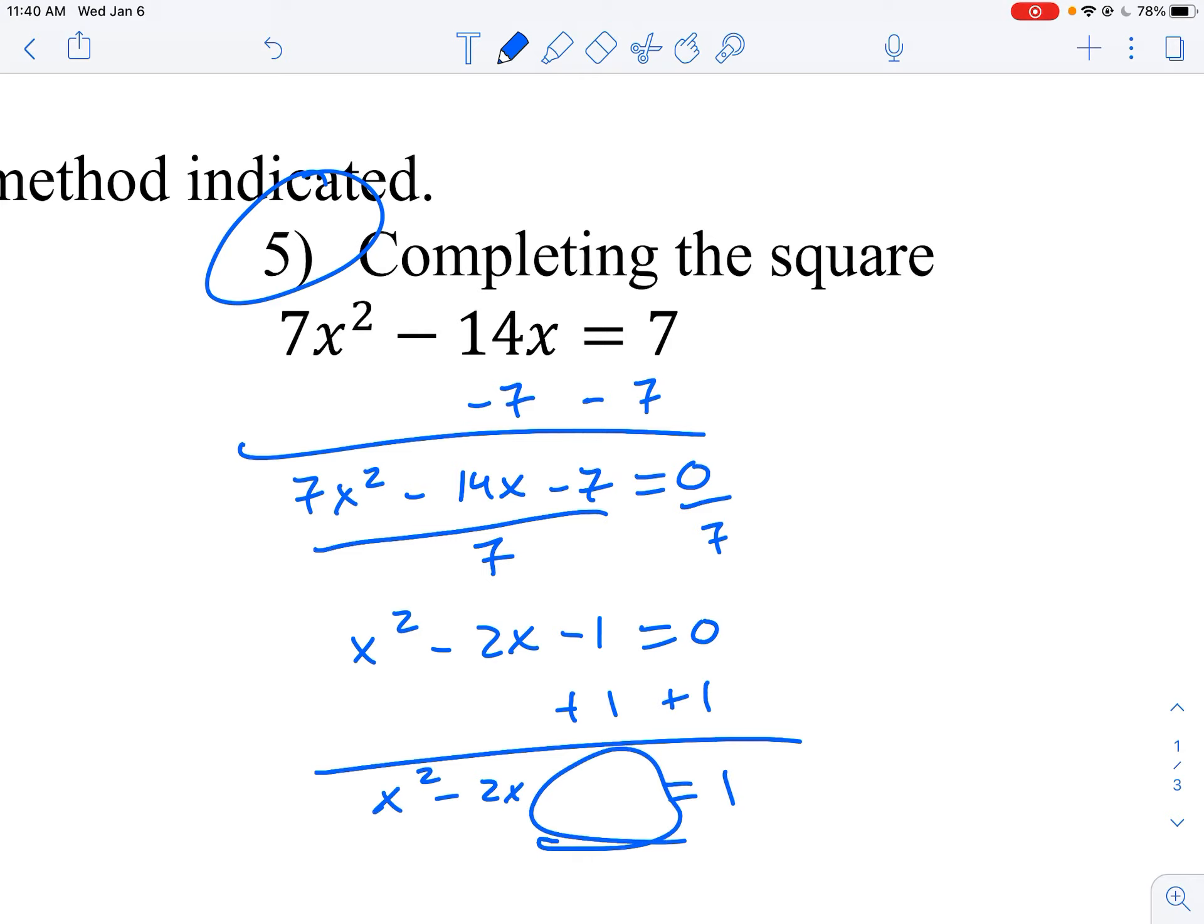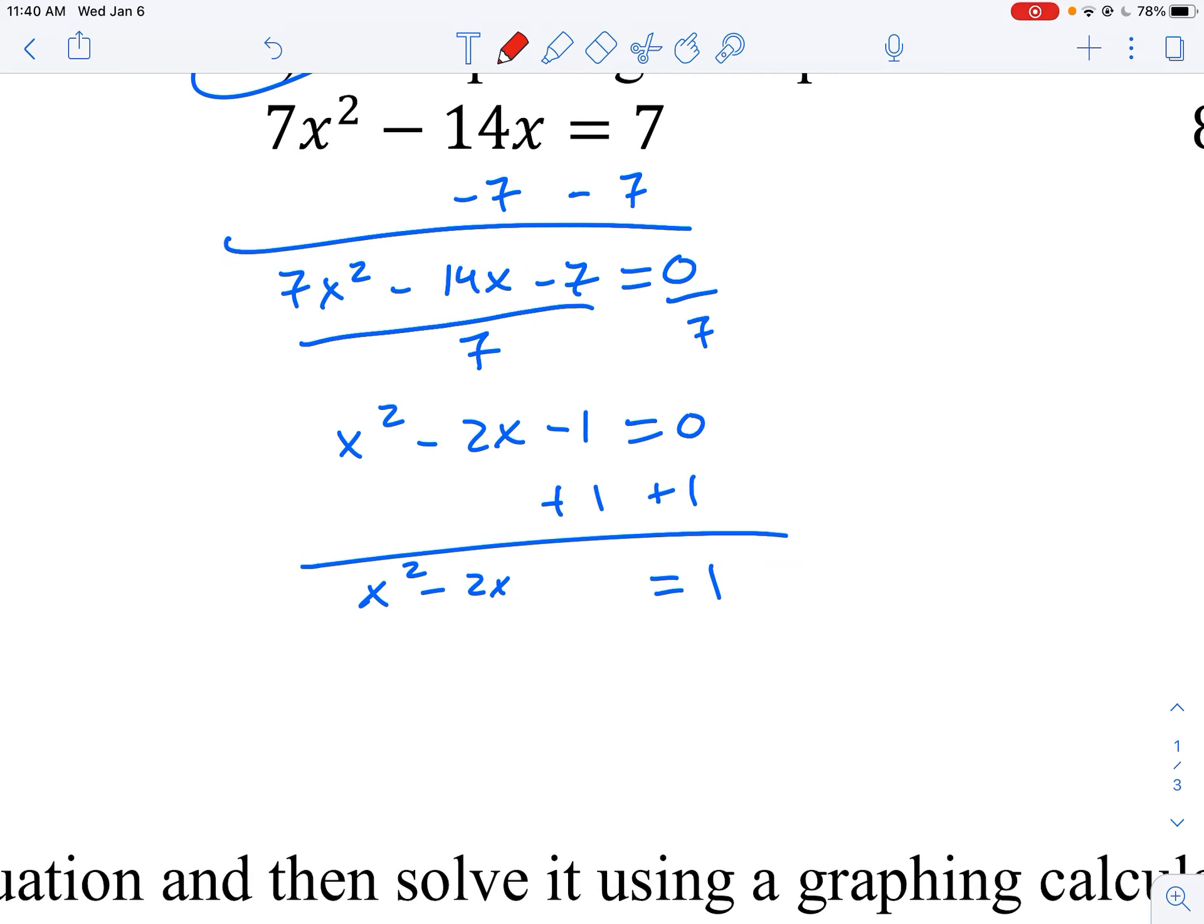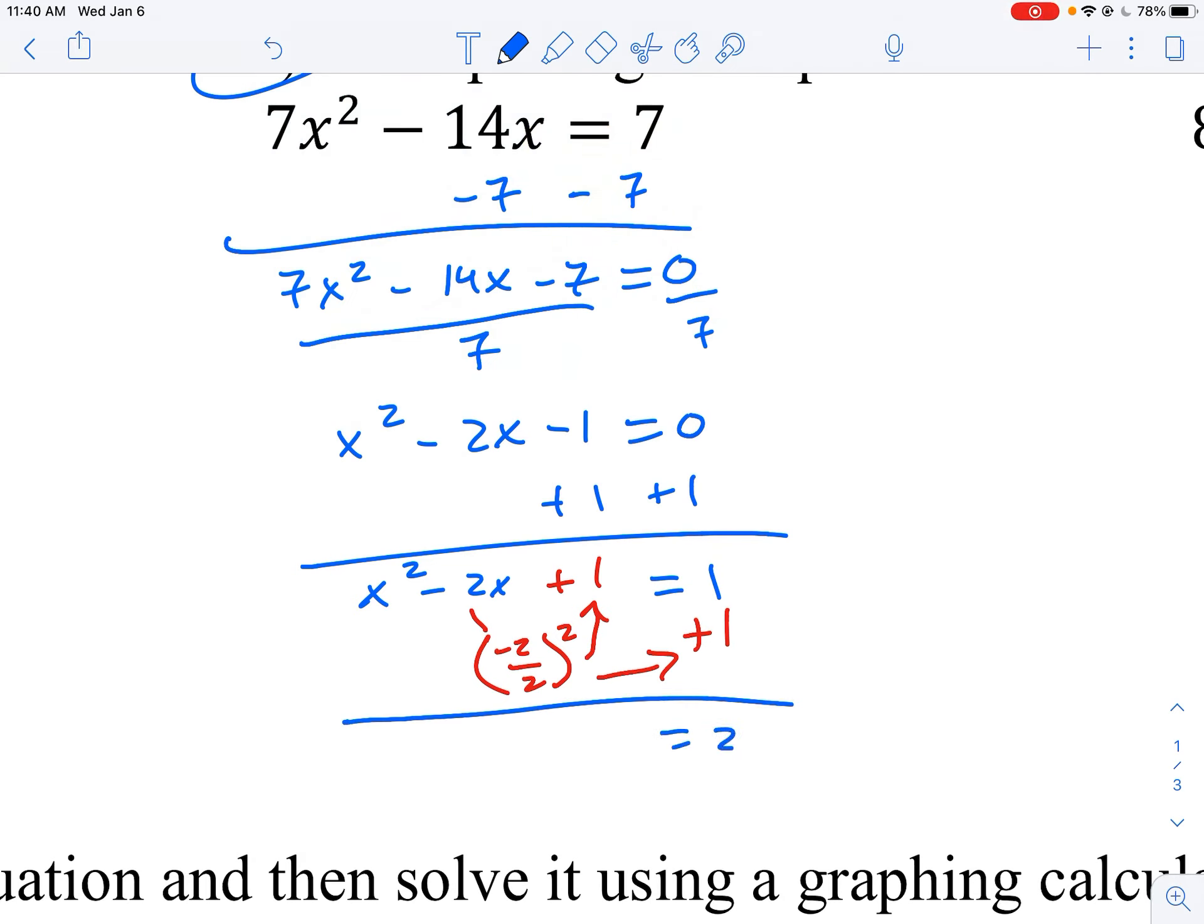And to complete the square on the left side here, you've got to take this b term, cut it in half, and square it. And that's what you're going to put here. Negative 2 divided by 2 is negative 1, squared is positive 1. And since we introduced something new over here, we're also going to introduce it over here as well.